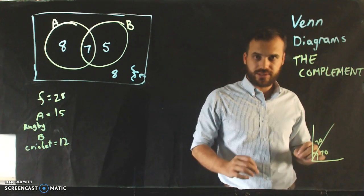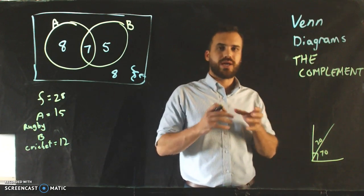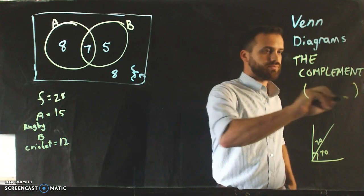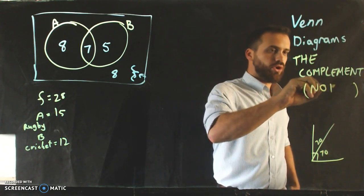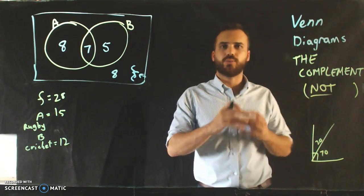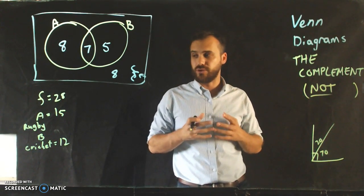Let's look at the complement. The easiest way to explain the complement when it comes to probability is this word: not. If you think of the complement as being the word 'not', you can't really go too far wrong.